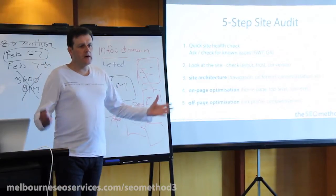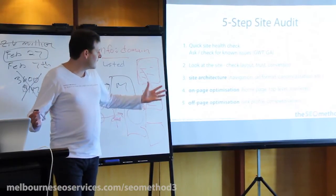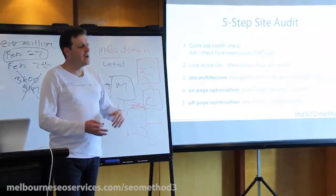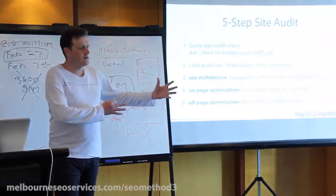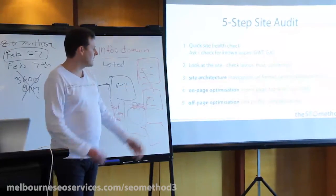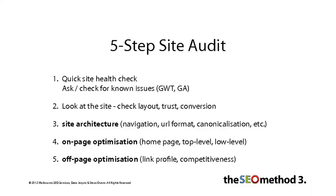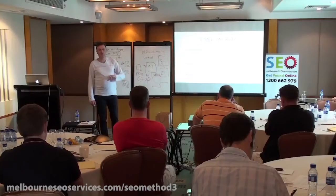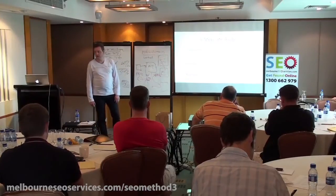Finally, we look at the link profile — what's the current situation, and what's the competitive nature of the market they're in? So we've got some idea of what they're up against. We also want to be aware of any potential problems with their link density, even if they haven't been hit. If they've got lots of exact-match anchor text, that's probably something we want to start addressing straight away.